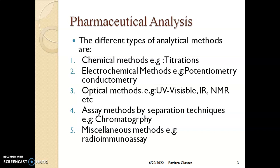The fourth method is assay methods using separation techniques, such as chromatography. Examples include HPLC, HPTLC, paper chromatography, TLC (thin layer chromatography), and column chromatography. In these methods, chemical constituents are individually separated and identified. The refractive index of the sample is recorded, and unknown samples in both synthetic and herbal drugs are analyzed.